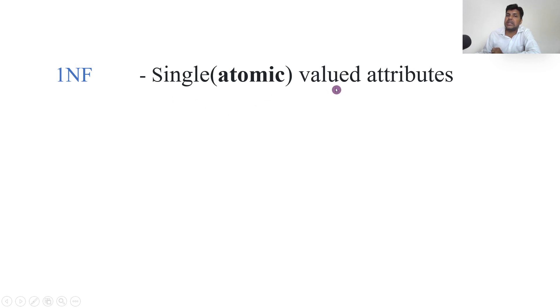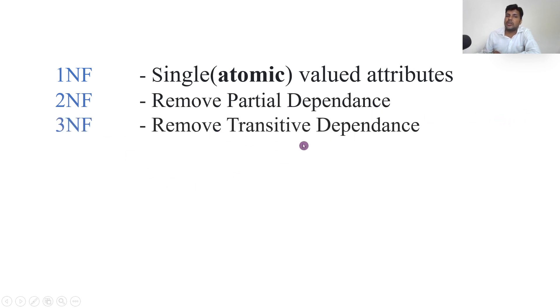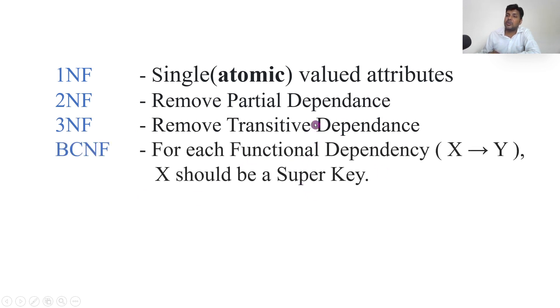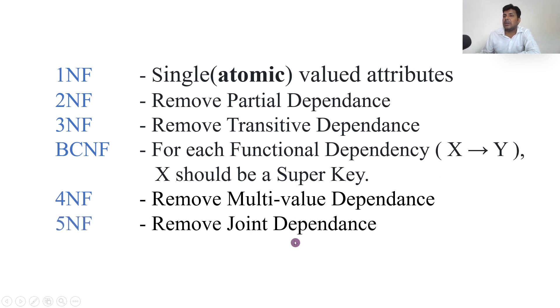To recap all normal forms: 1NF — single-value attributes, unique column names, and consistent domain. 2NF — remove partial dependency (partial primary key dependency removed). 3NF — remove transitive dependency (non-key attribute depending on non-key attribute removed). BCNF — key attribute depending on non-key attribute removed. 4NF — multi-value dependency removed. 5NF — join dependency removed. These are the six different types of normal forms.